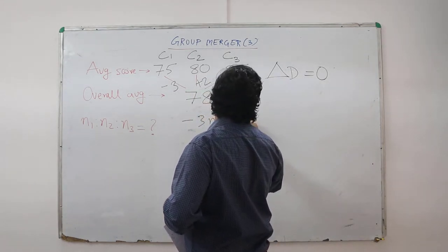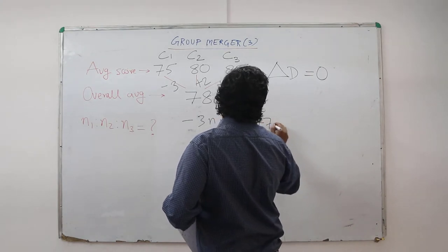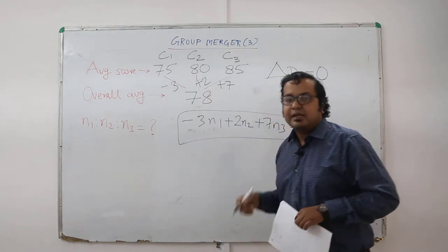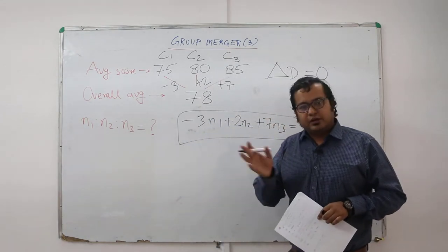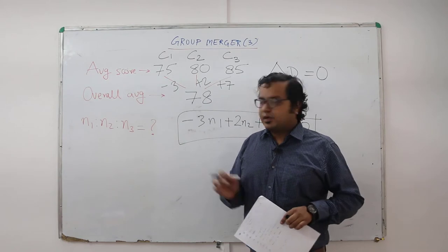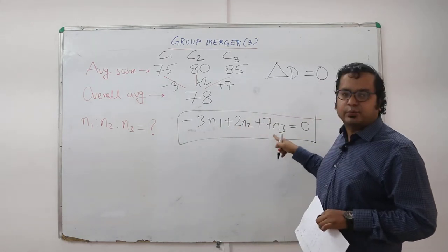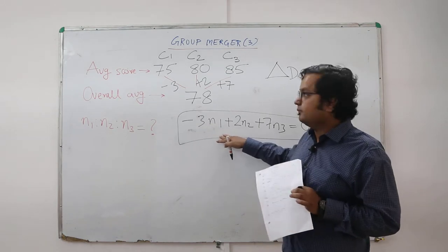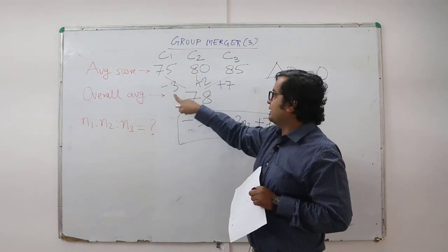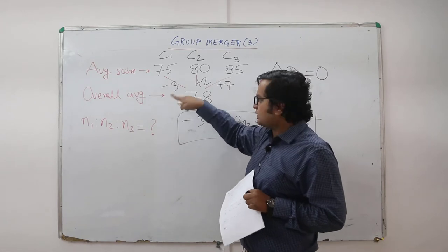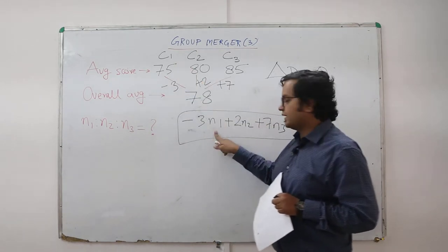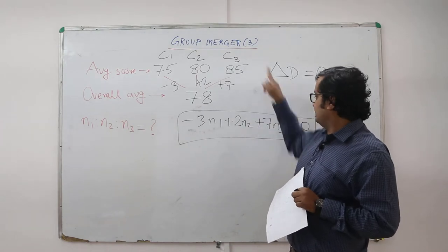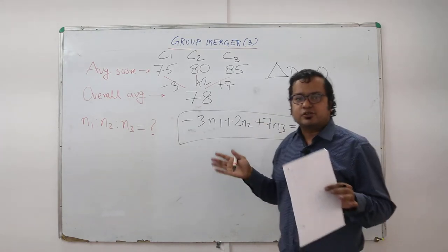You need to make the net deviation equal to zero. Mathematically: minus three n1 plus two n2 plus seven n3 equals zero. All values of n1, n2, n3 satisfying this relationship will be the correct answer. The total deviation is the per-head deviation multiplied by the number of students in each class, and their sum must be zero.